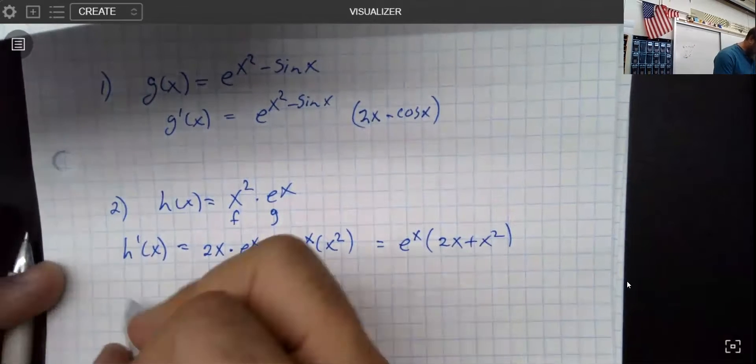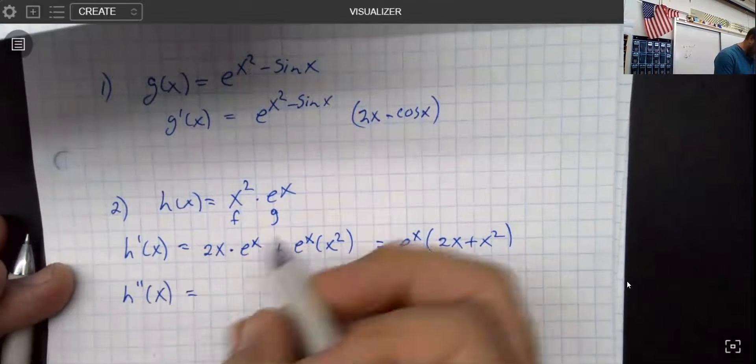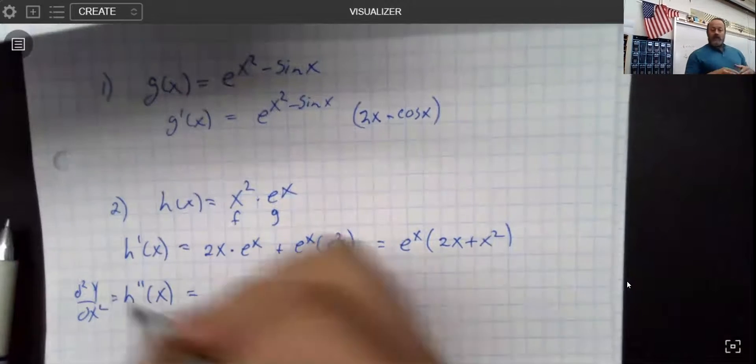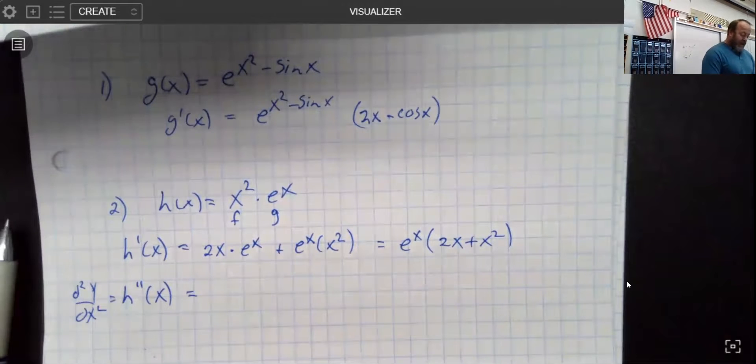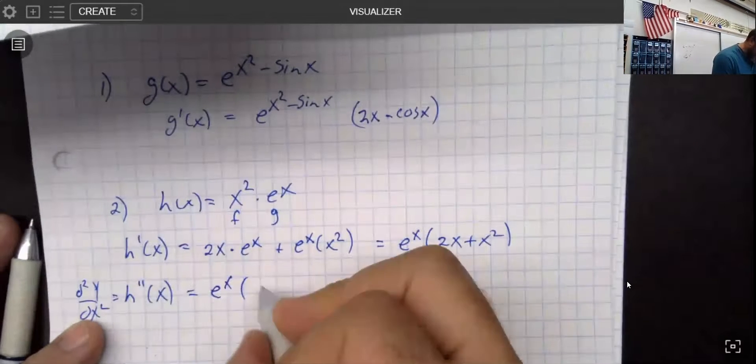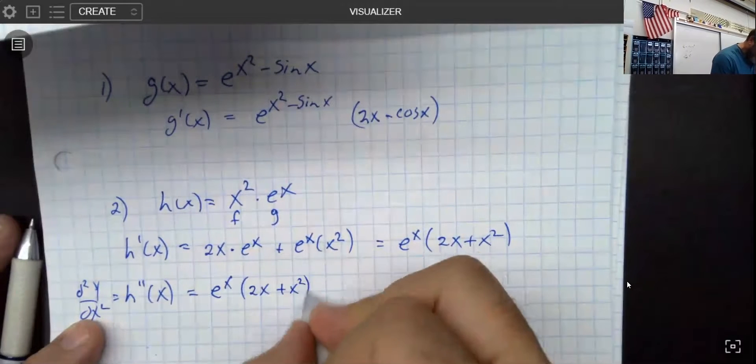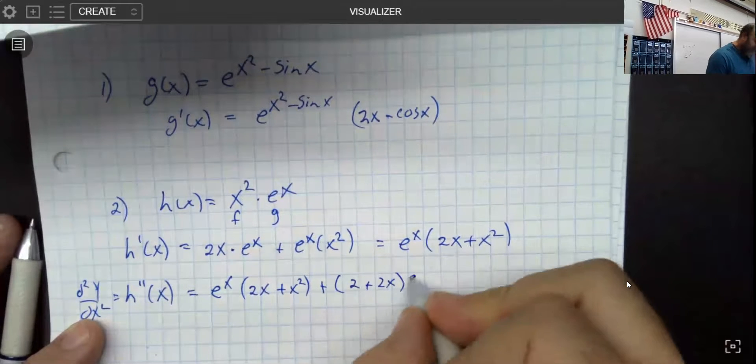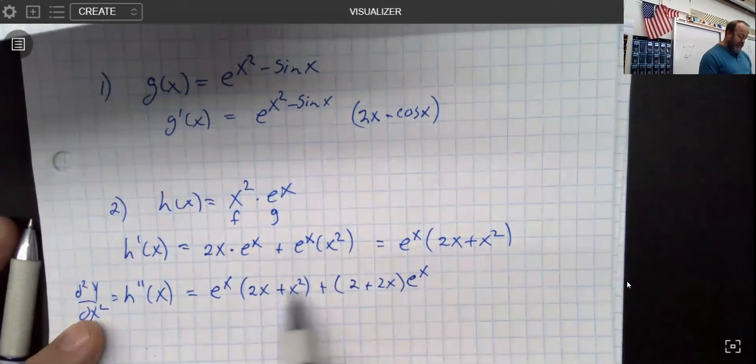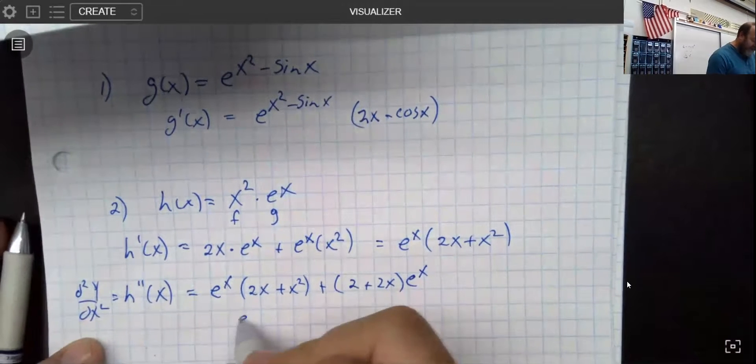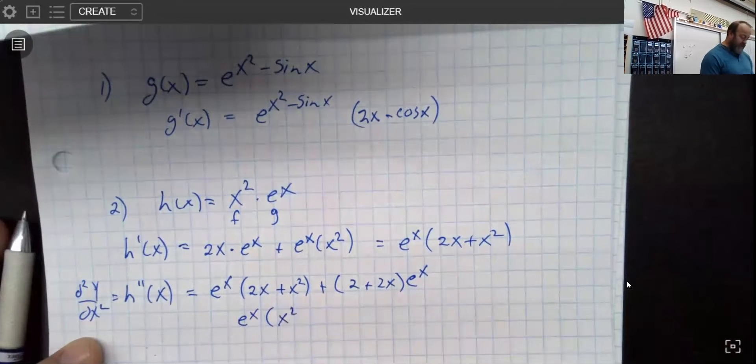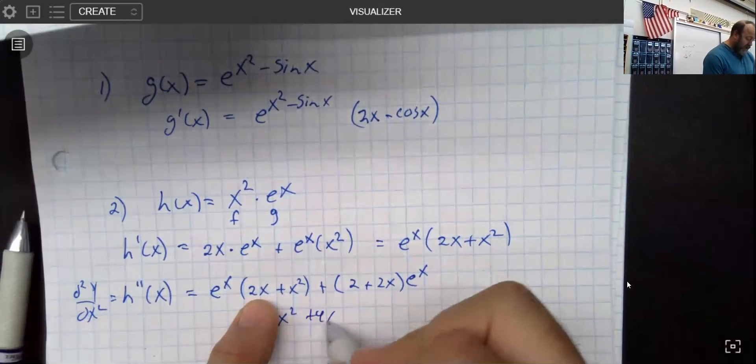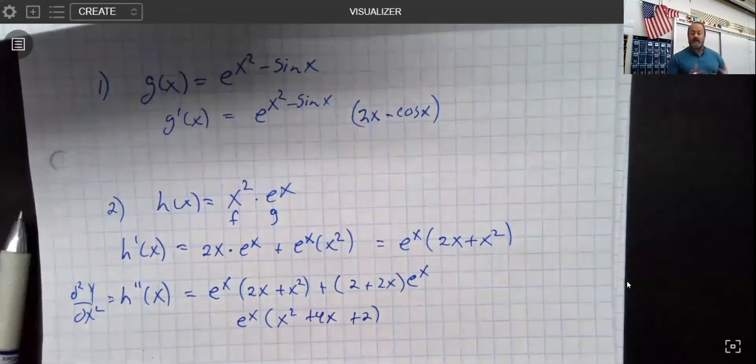So if I wanted to, I could now ask for h double prime, also known as d squared y dx squared, right? So if I was going to do the derivative of that derivative, I could do f prime g, so f prime g plus g prime, derivative of this would be 2 plus 2x. So f prime g plus g prime f. And again I noticed that all of these things have an e to the x in common. I would have an x squared in this one. Both of these e to the x's I had two x's, so I had a total of four x's, and I had two. So h double prime was a fairly benign question.